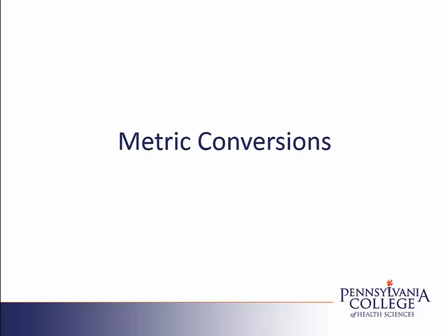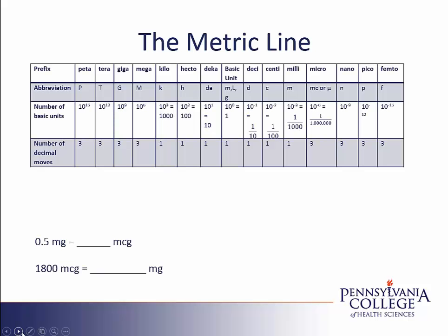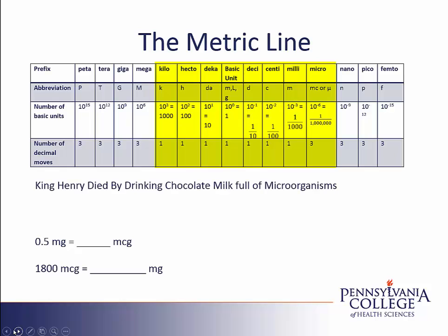We're going to look at the metric line as our first approach. The metric line is pictured in this chart, which includes more of the metric line than what you need to memorize — I included more so you can see the patterns beyond the part normally used in healthcare. We'll focus on the portion we need to memorize. The units can be memorized using the mnemonic: King Henry died by drinking chocolate milk full of microorganisms. Each beginning letter represents the prefix for the different units, starting at kilo and traveling down through micro.